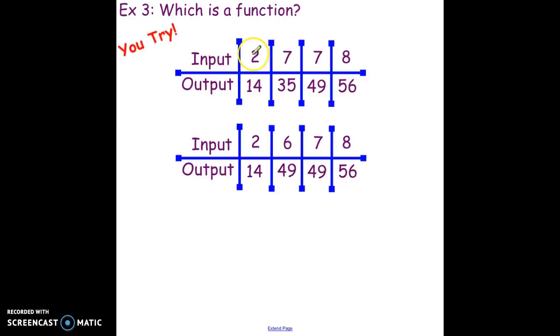Try this one. Remember, your inputs are the things that you type into the vending machine, your outputs are the things that come out. Decide which one of these is not a function. If you said that the second one was the function, you were correct. This first one is not a function because the first time we type in C7 we get 35, the second time we type in C7 we get 49. That's not functioning correctly.